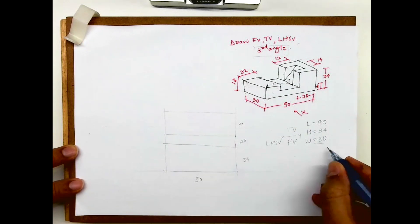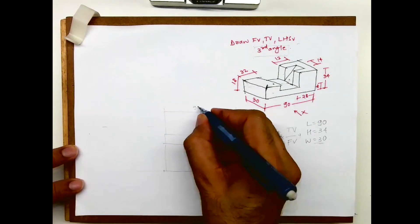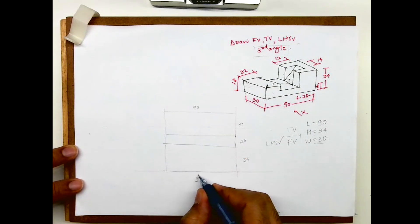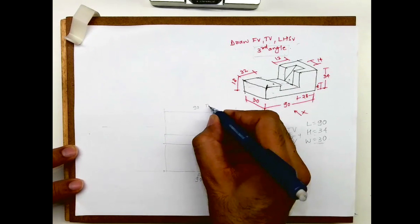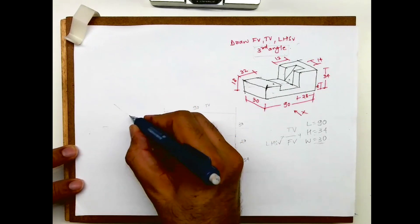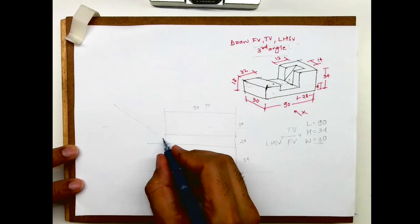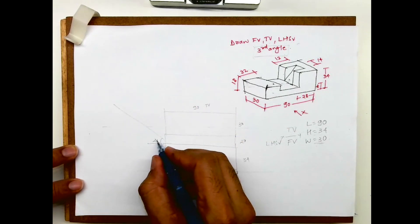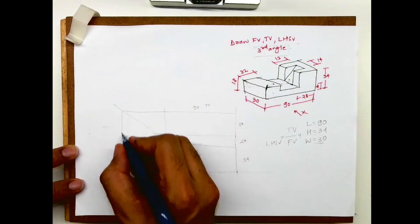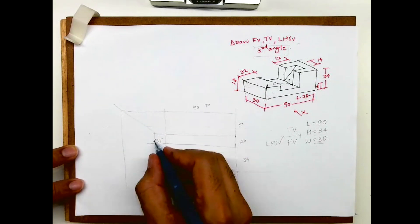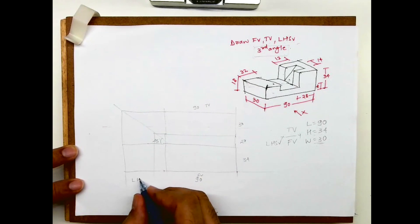The height is also 90, so this is the front view and top view box. Now I will draw a 45-degree line from here, extend this line — wherever it cuts, I will go down. This is how I will draw the side view box — this is the left-hand side view box.